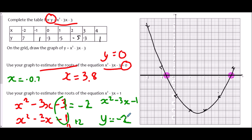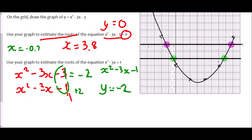We draw the line y equals negative 2, which is a horizontal line going through negative 2 on the y-axis. We find two points of intersection. Reading up from each intersection to the x-axis: the first gives x equals negative 0.2, and the second gives x equals 3.4.